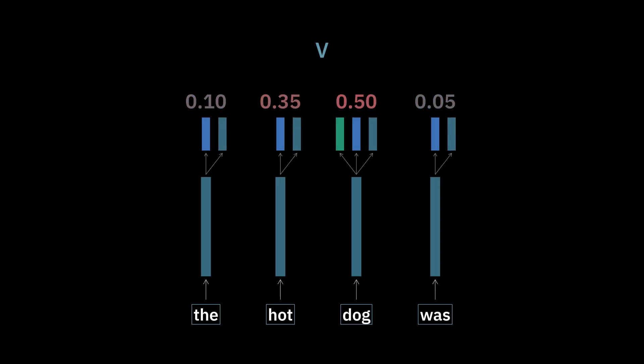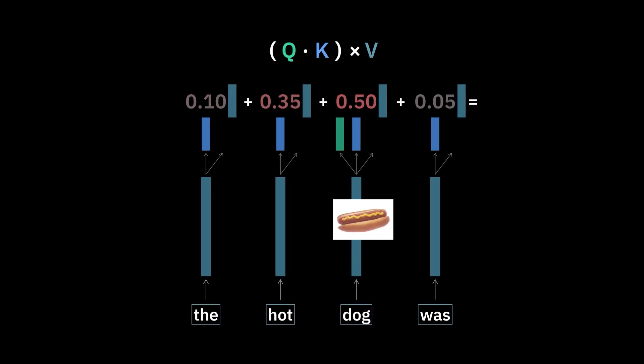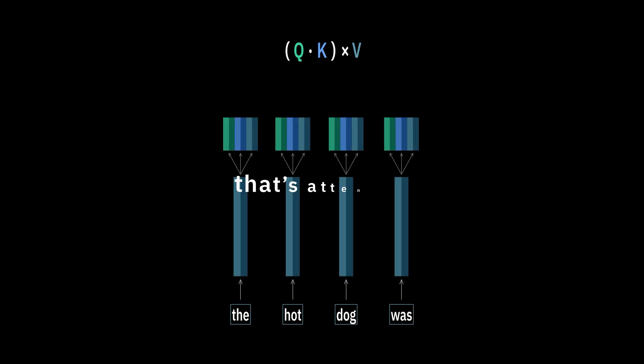Let's project one more vector called V that says 'here's what I mean.' We multiply these by your attention scores, add them all up, and get the final meaning. We do this for every token so that every token attends to every other token. That's attention.